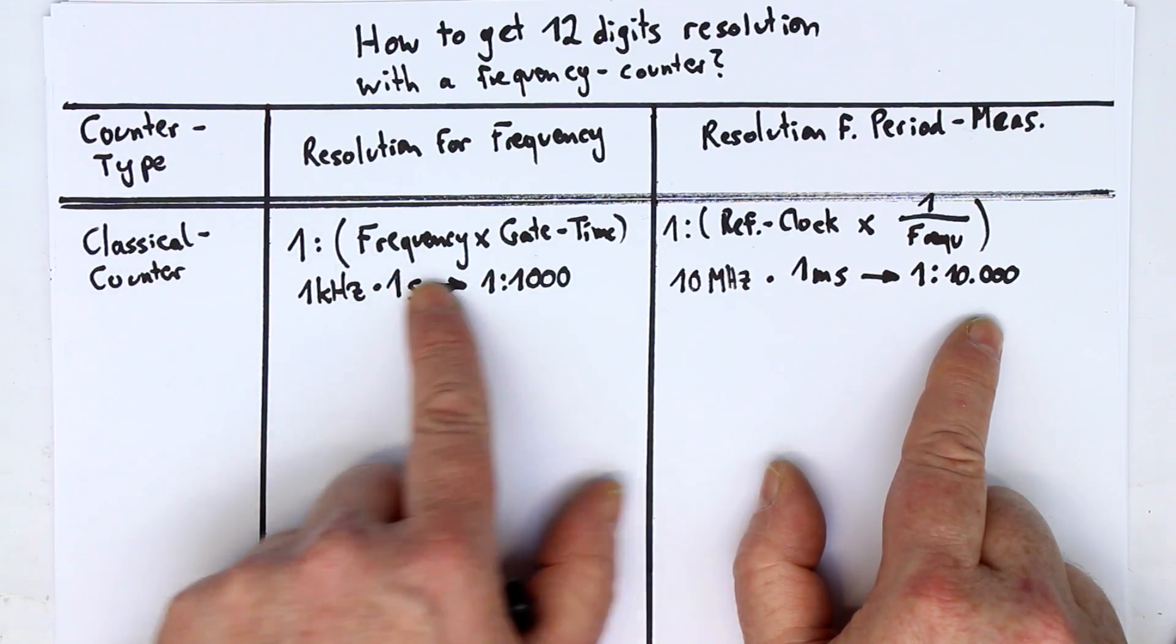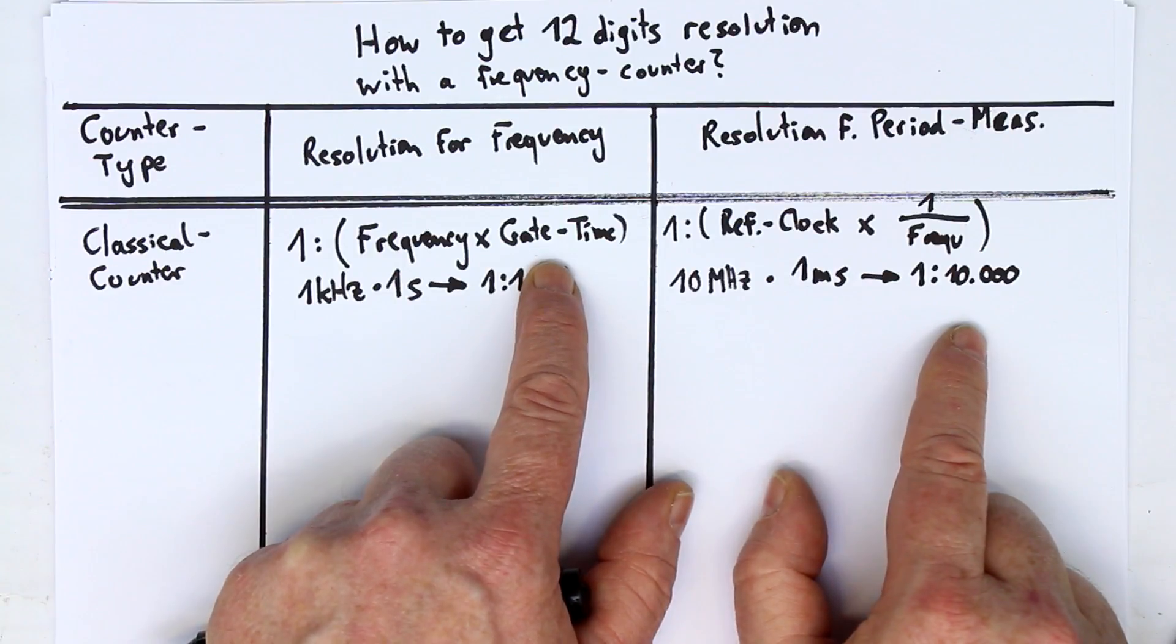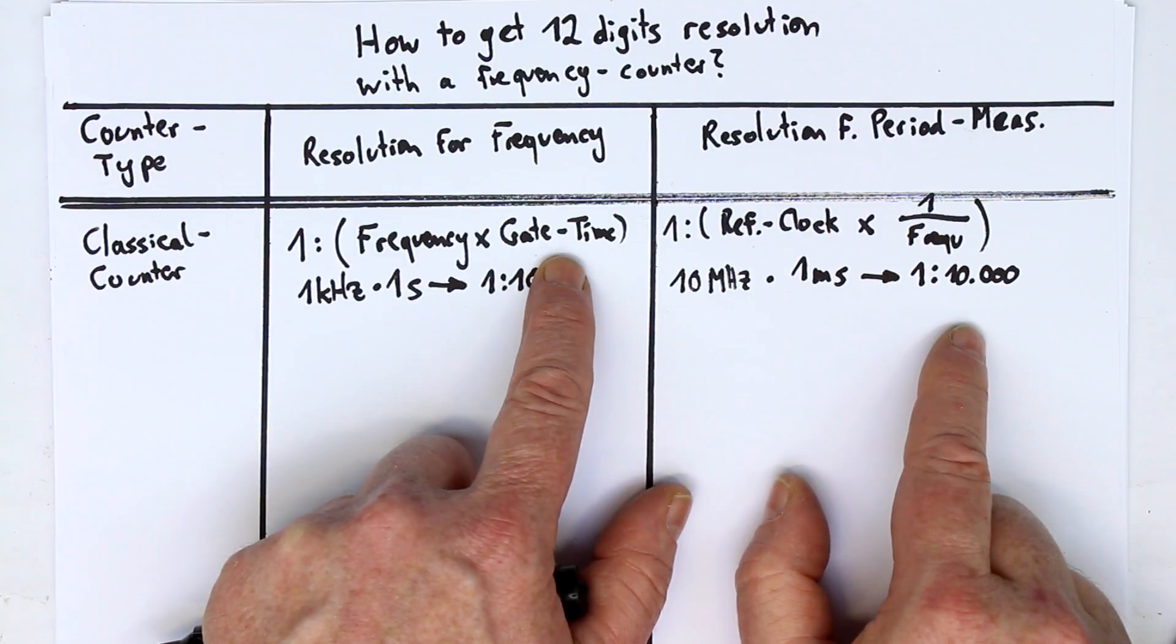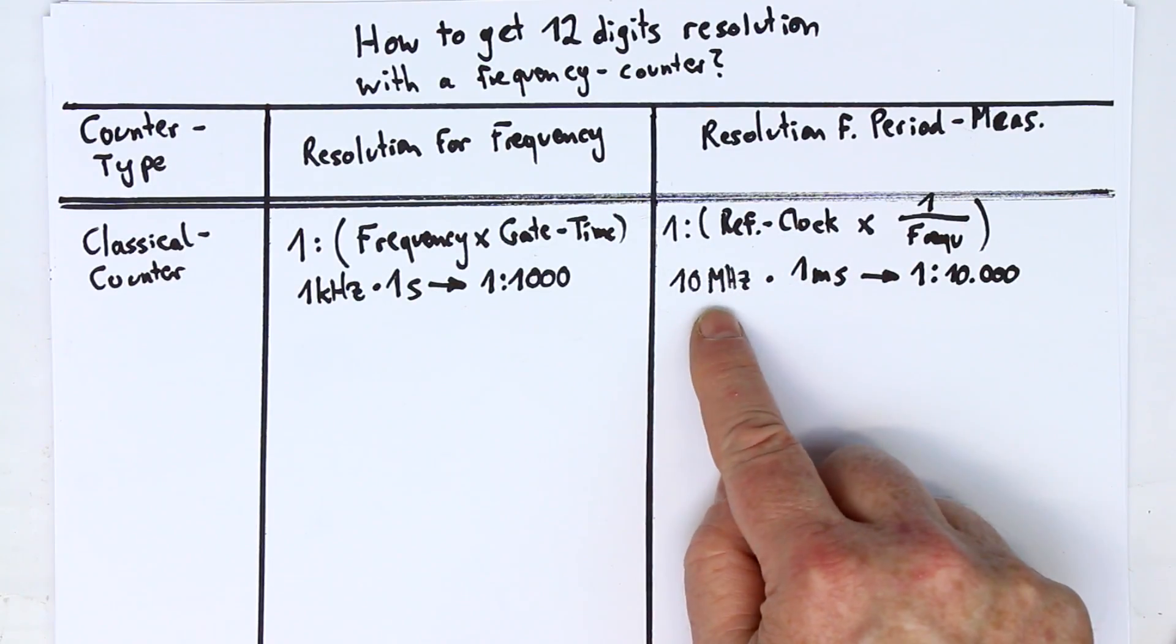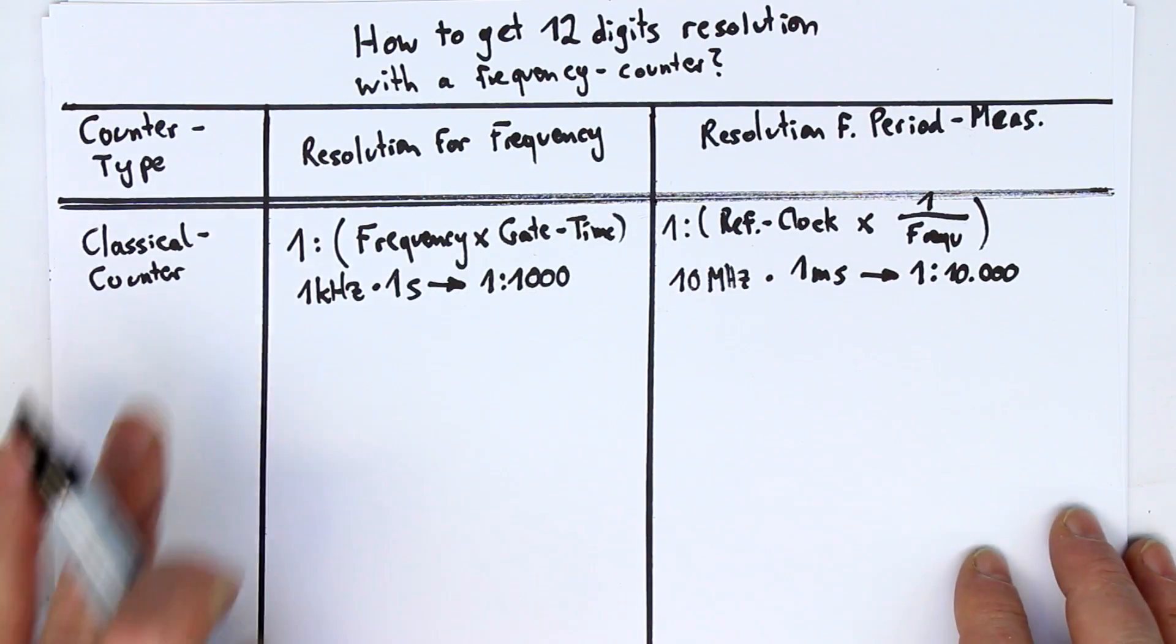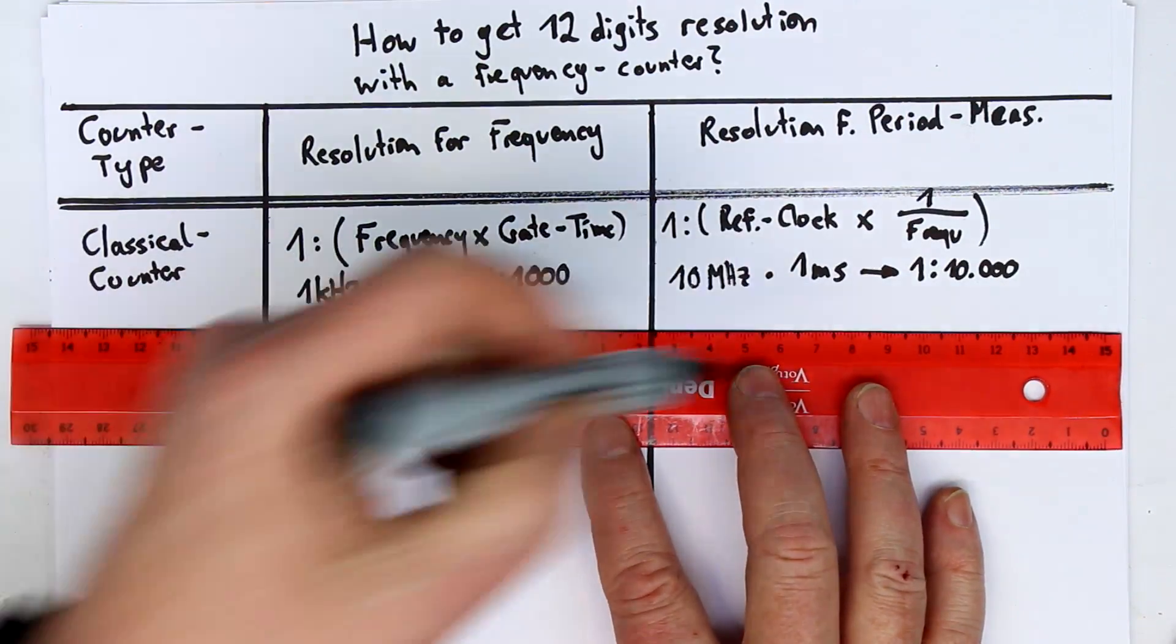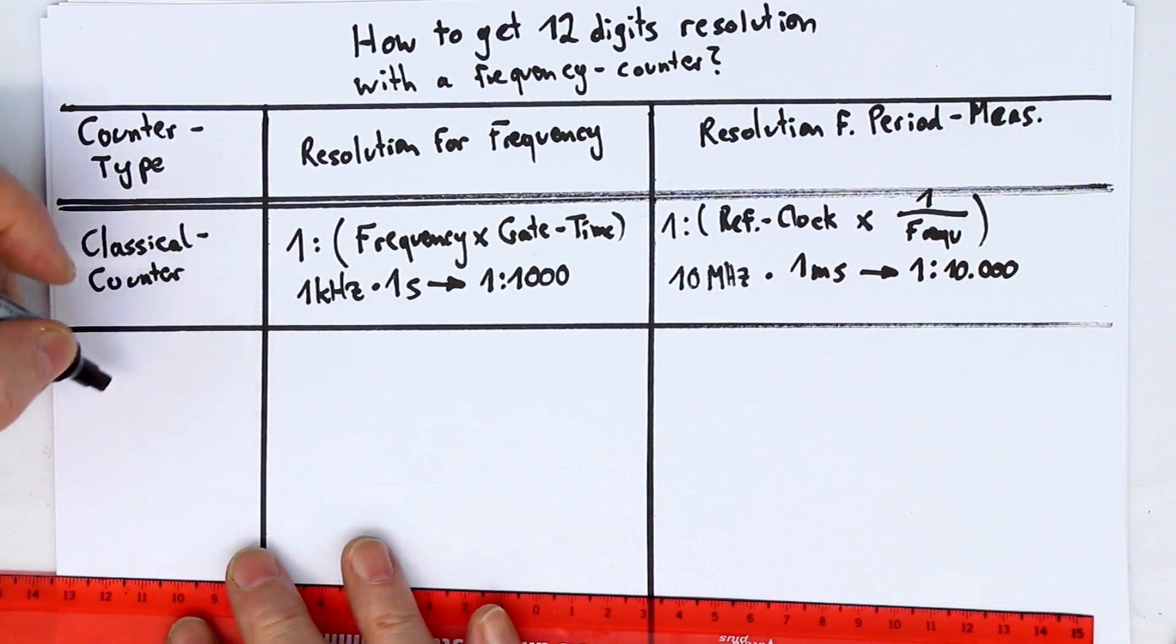So, what can you do about it? You can extend your gate time to 10 seconds, 100 seconds, but how long do you want to wait until you get six or seven digits of resolution? And what could you do here? Well, the only variable you have is your reference clock, and you can't get them much higher than 10 megahertz. So, there is not much to do to improve the resolution of a classical counter. That's why, at some time, the idea of the reciprocal counter came out.